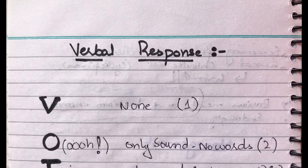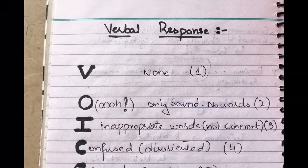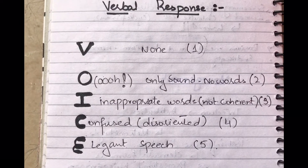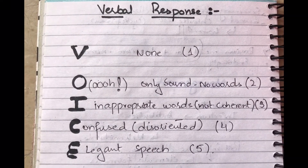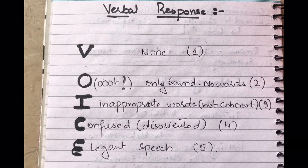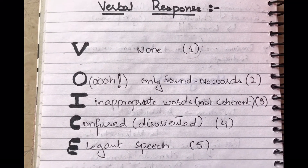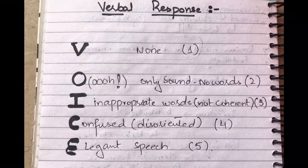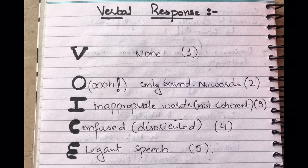Moving on towards the mnemonic for Glasgow Coma Scale. For the verbal response, the mnemonic is VOICE. When the person does not speak, he has no voice — that is a score of 1. If he has only sounds like groaning, that is score 2. If he speaks inappropriate, non-coherent words, that is 3. 'I' is for inappropriate words, 'C' is for confused disoriented conversation — that is 4. And 'E' is for elegant, oriented speech — that is 5.